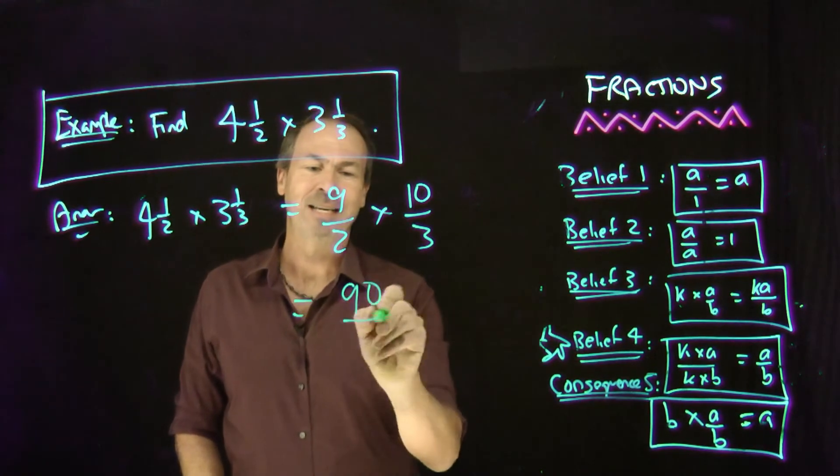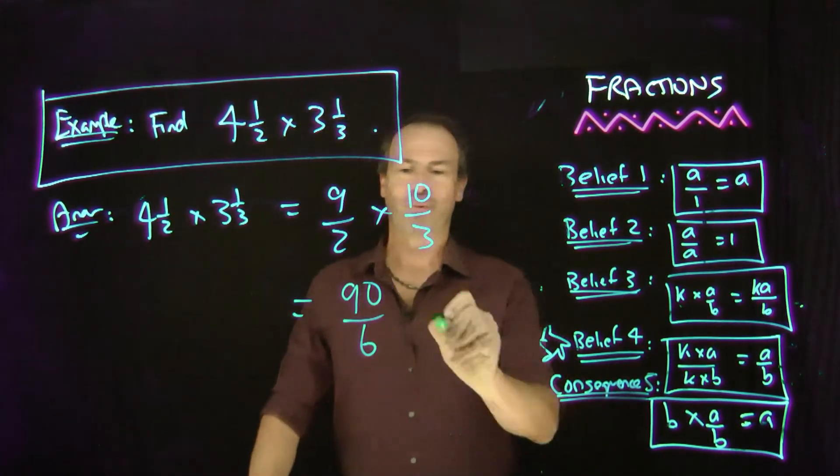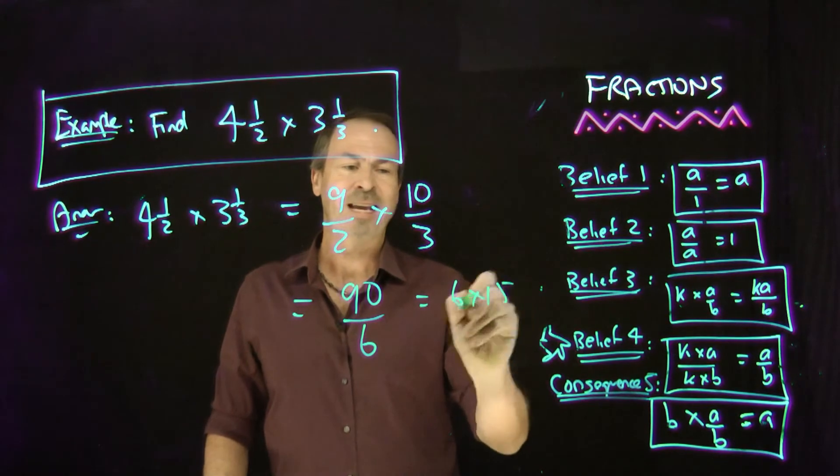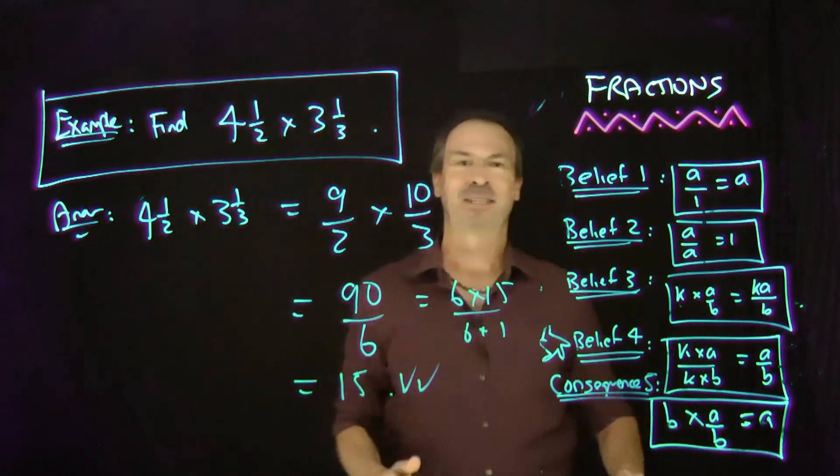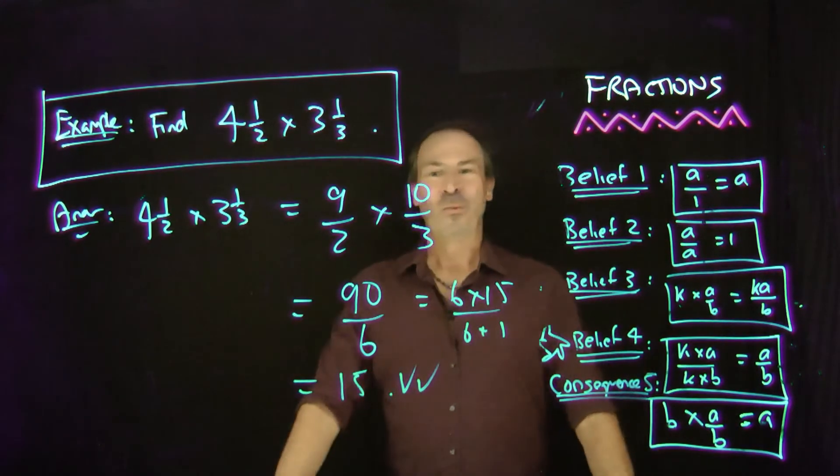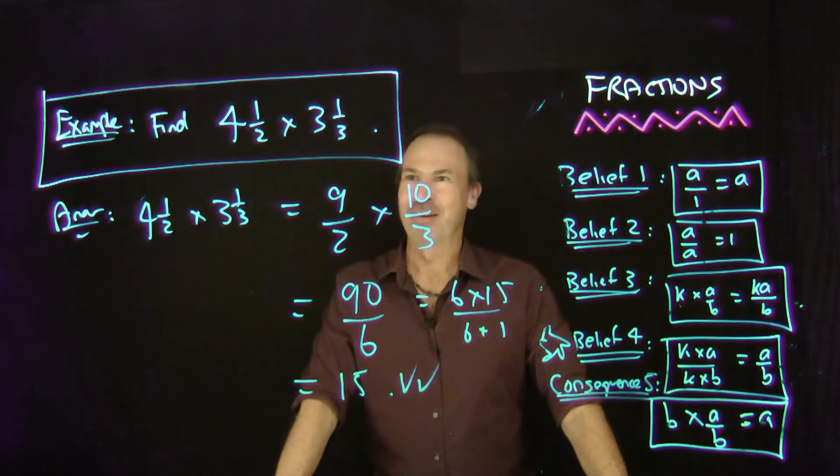So actually, by multiplication of fractions, this is 90 over 6. And that's really what, 6 times 15 and 6 times 1? Yes, that's really 15. 90 divided by 6 is 15. Wow! Great stuff. There it is.